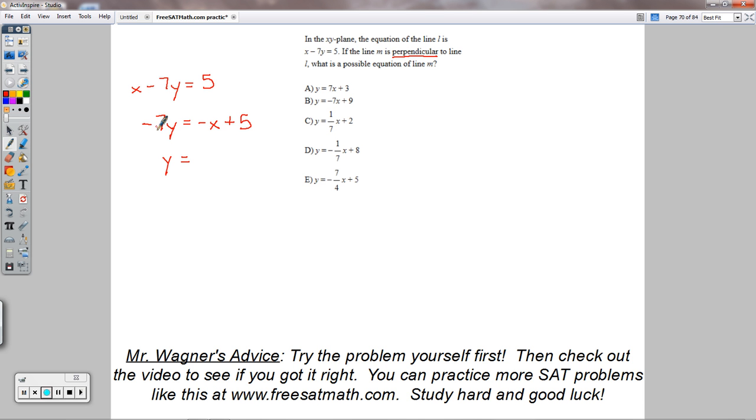So this is like negative 1. If I divide everything by negative 7, I'd have positive 1 over 7, or 1/7 X, and then this would become negative or minus 5/7. What I'm concerned with here, what I really care about to answer this question is this right here. This is the slope of this line, the initial line given.